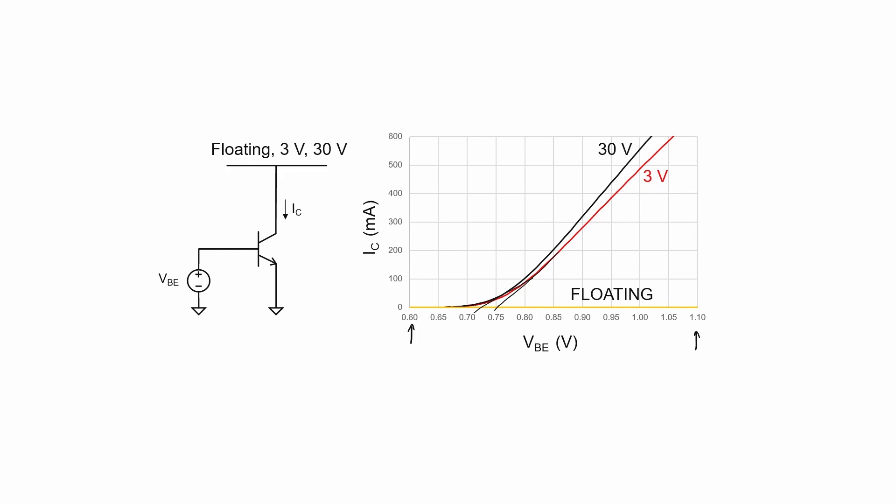That's true whether the collector is at 30 volts or whether it's down at 3 volts. By the time the base emitter voltage gets to about 0.8 volts or so, we can basically say that the transistor is fully on.